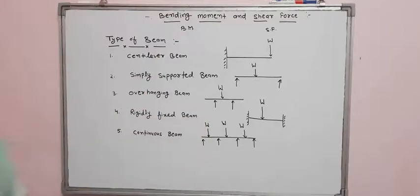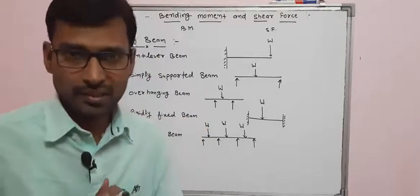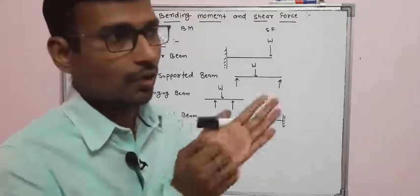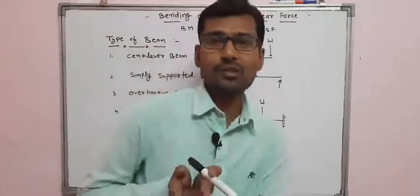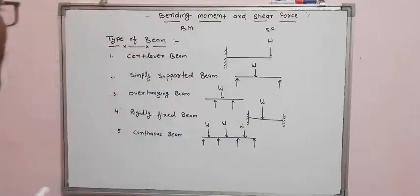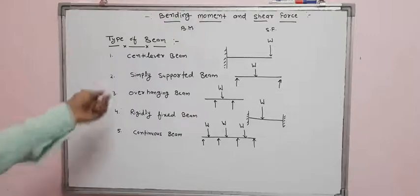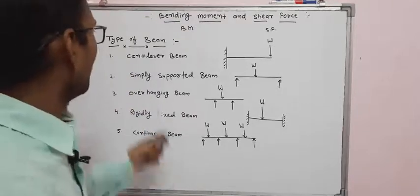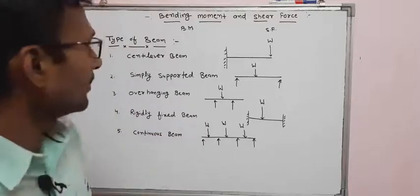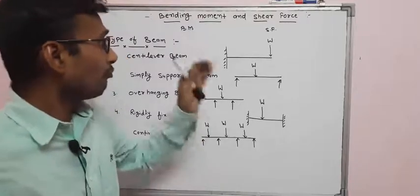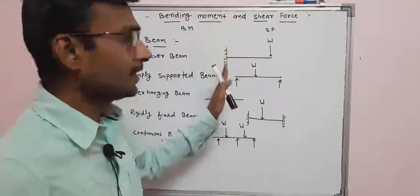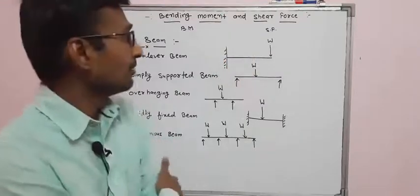We will discuss the types of beam and types of loads, and then continue with numerical problems based on them. The first type is the cantilever beam. Cantilever beam is a single supported beam — fixed from one side and free on the other side.